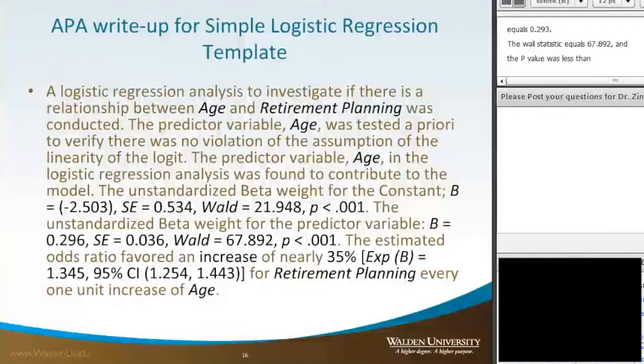The estimated odds ratio favored a nearly 35% increase, where the exponentiated beta equals 1.345, with a 95% confidence interval ranging from 1.254 to 1.443 for retirement planning for every one unit increase in age.